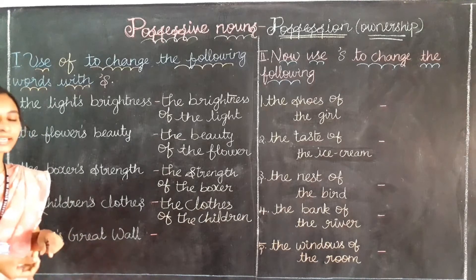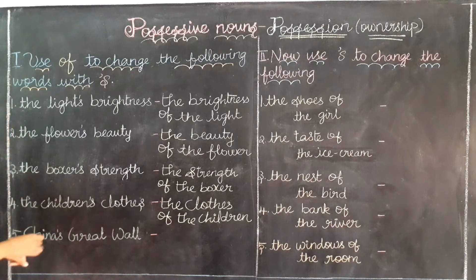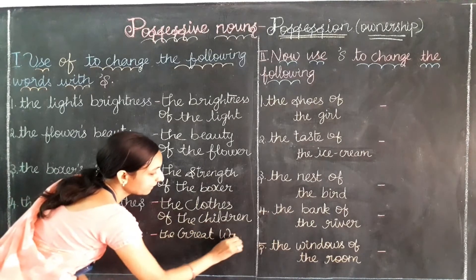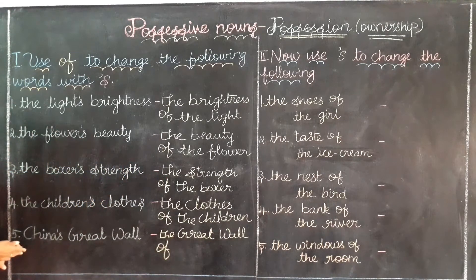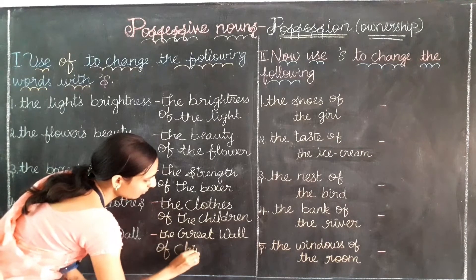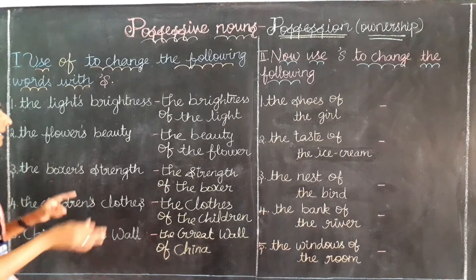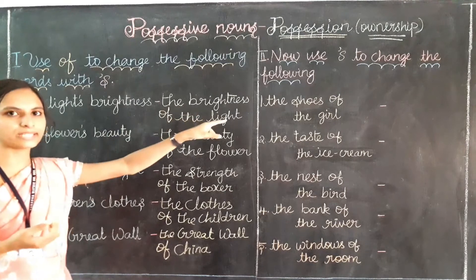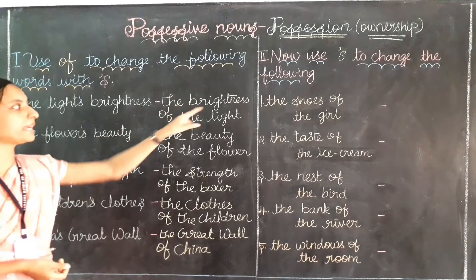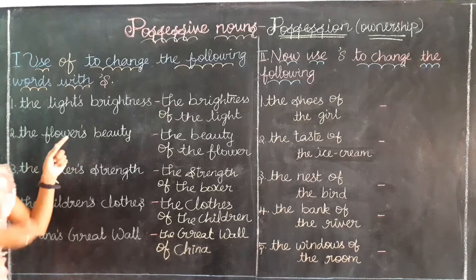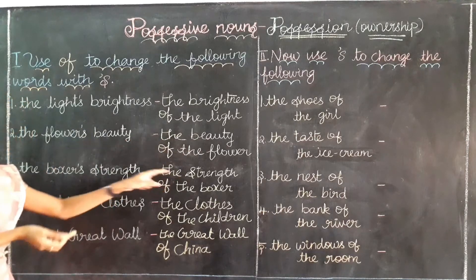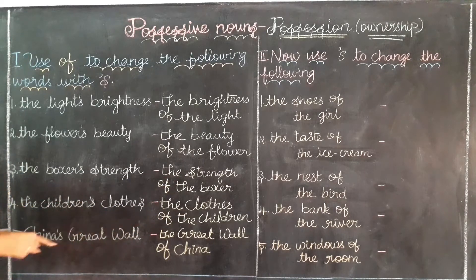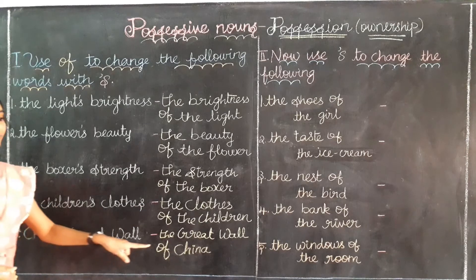Next: 'China's great wall.' China owns the great wall, so we write 'the great wall' first, then 'of,' then 'China' — simply removing the apostrophe-S. There is no 'the' before China, so we write China directly. The answer is 'the great wall of China.' So to summarise: the boxer's strength → the strength of the boxer; the children's clothes → the clothes of the children; China's great wall → the great wall of China.